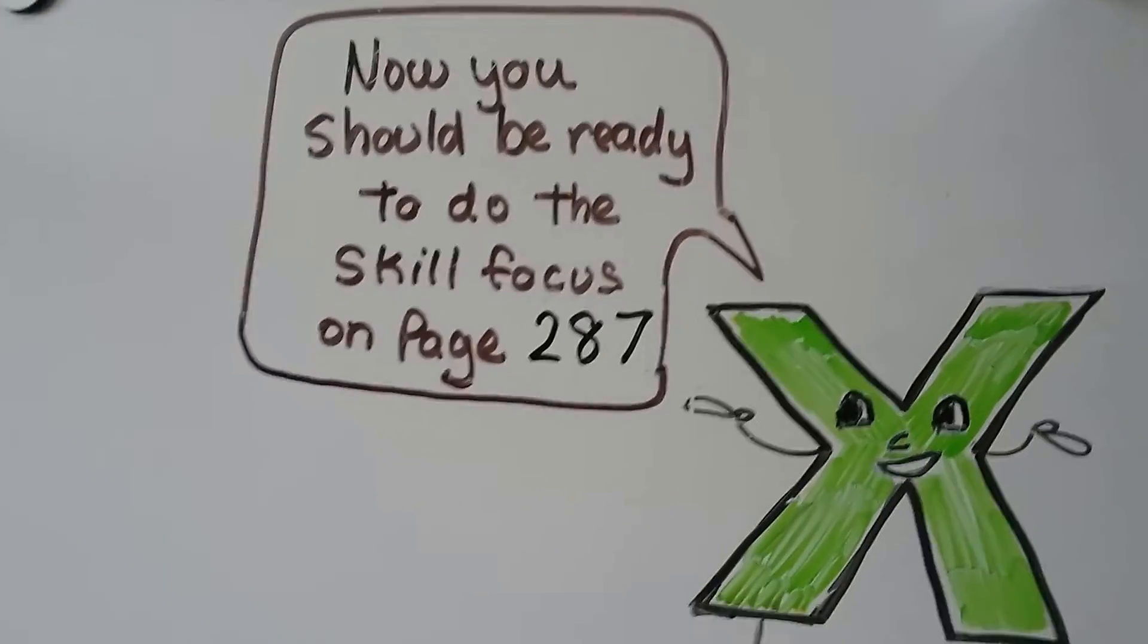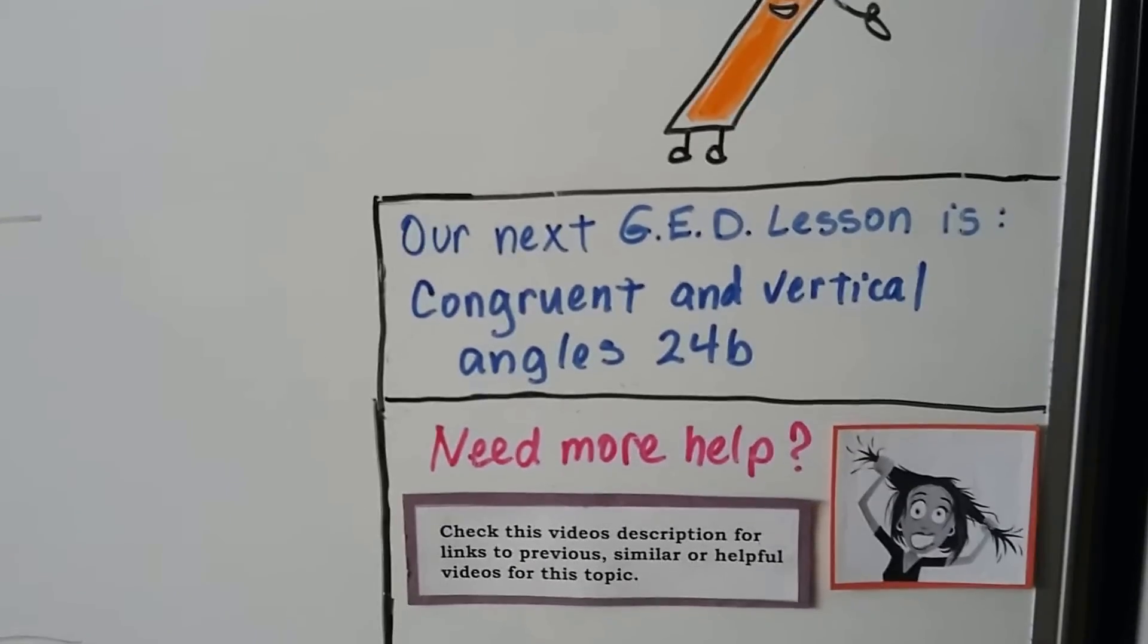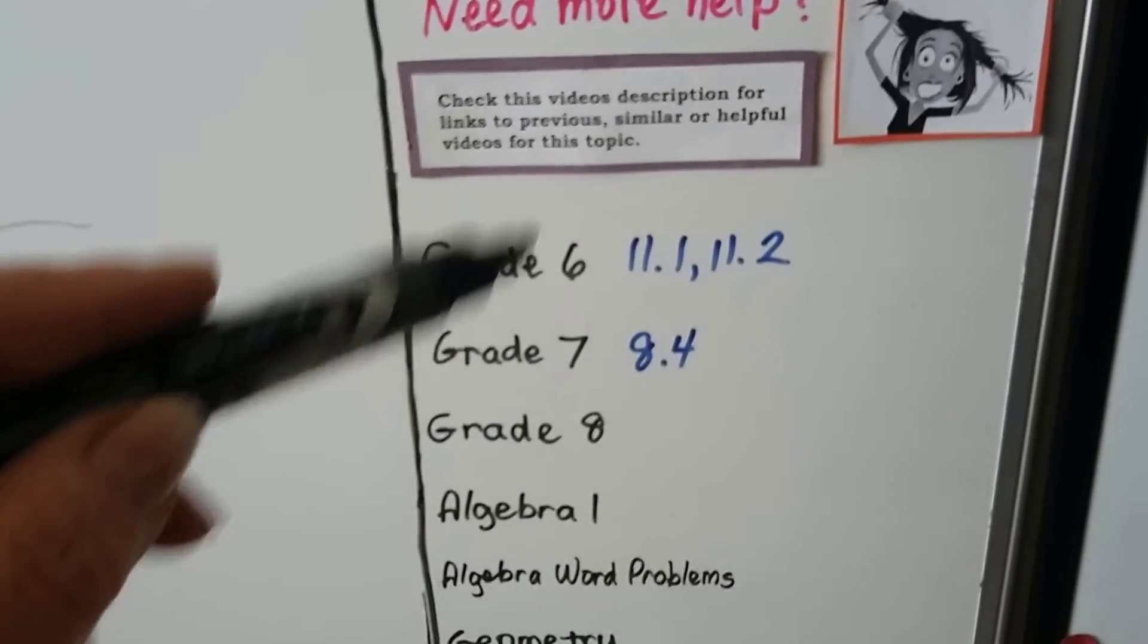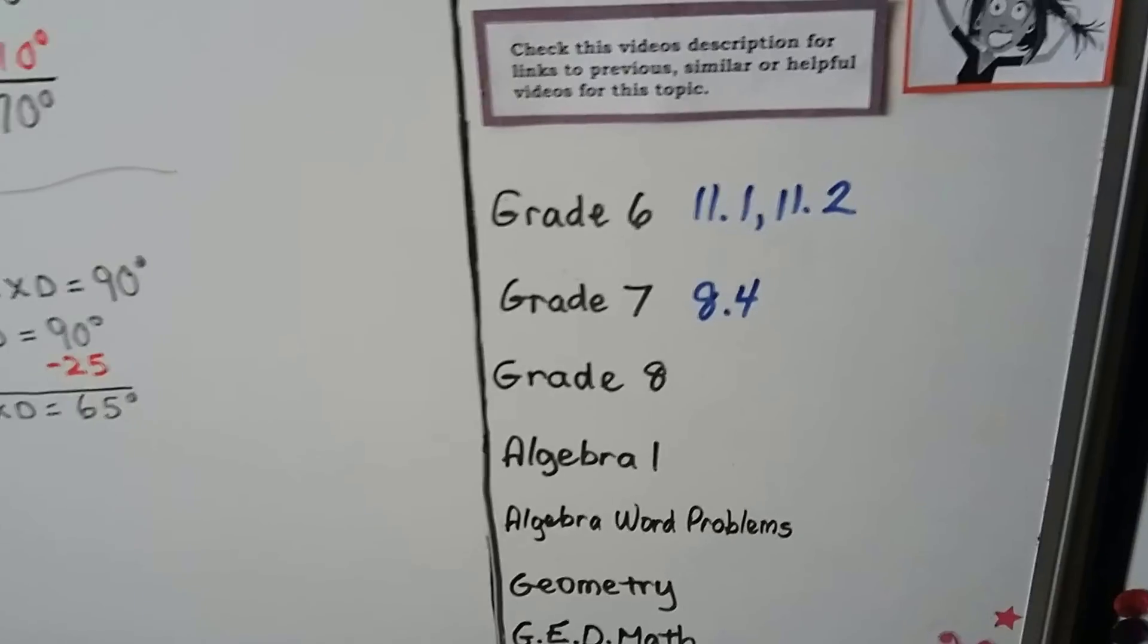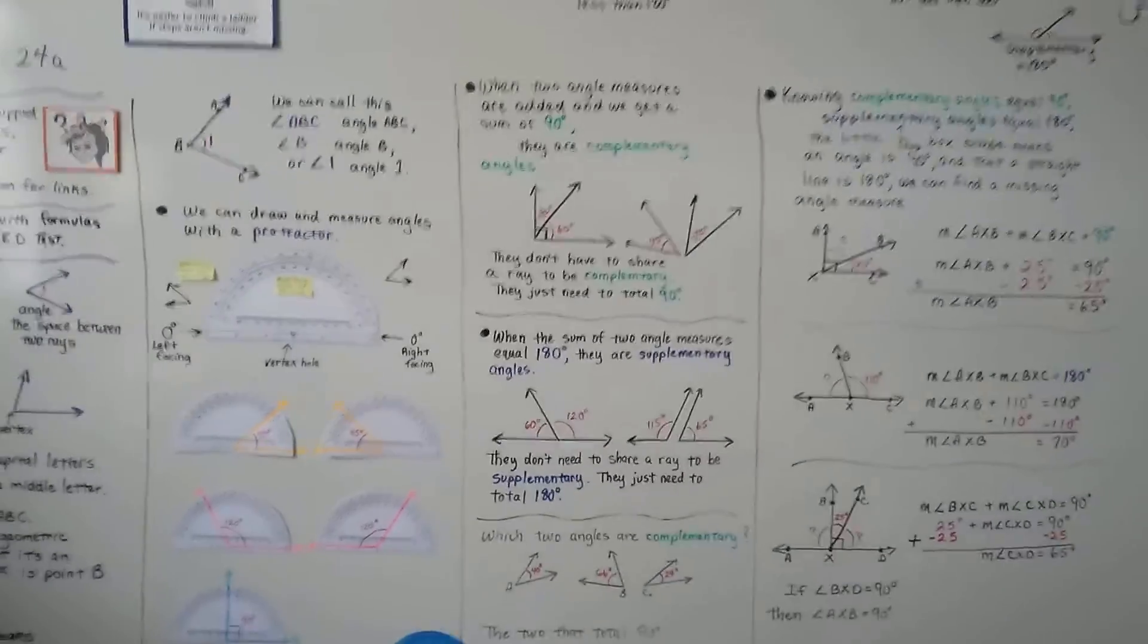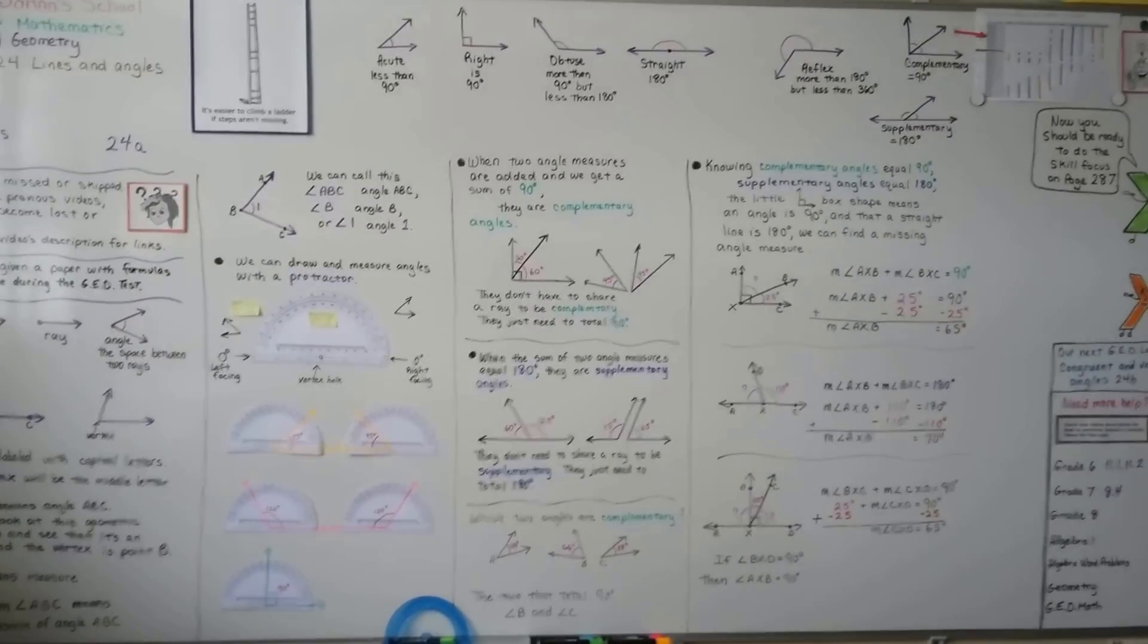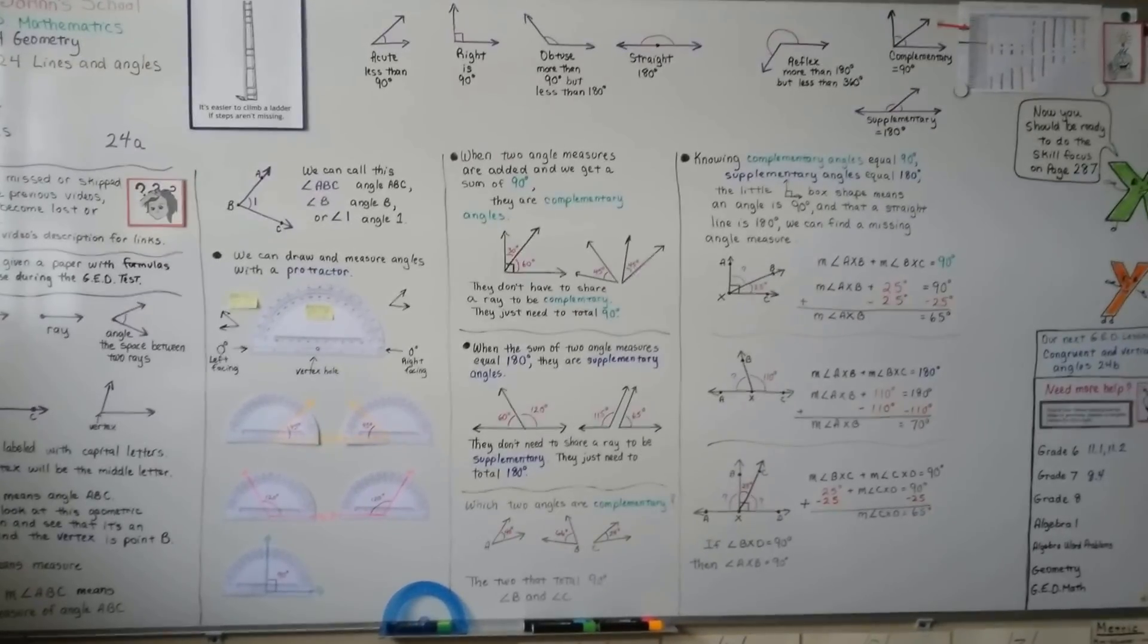You should now be ready to do the skill focus on page 287. And our next lesson is going to be about congruent and vertical angles. Remember, congruent means they're equivalent, that they're the same. And there's the links to the middle school videos that are going to help you about lines and angles. And we don't have any previous GED lessons for 24 yet. This is the first one. But those middle school ones should help you. Then pretty soon coming up, we'll even have some eighth grade ones once we get into adjacent angles and stuff. So keep going. I'm proud of you. And I'll see you next time. Bye.